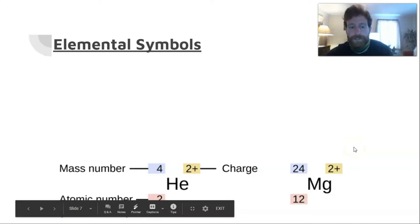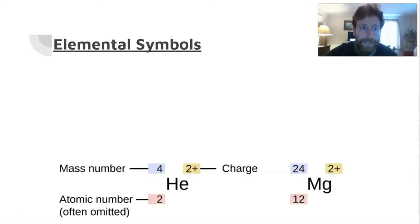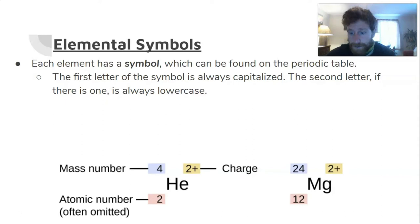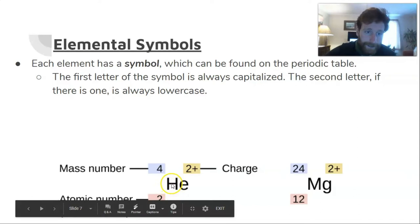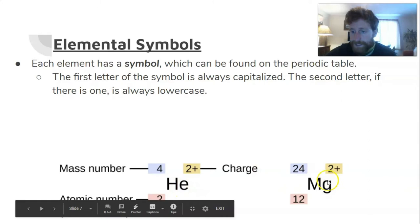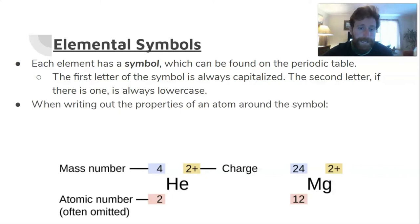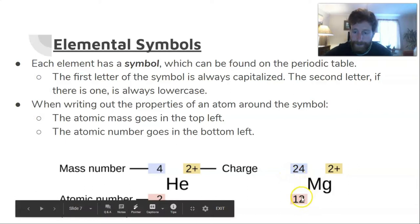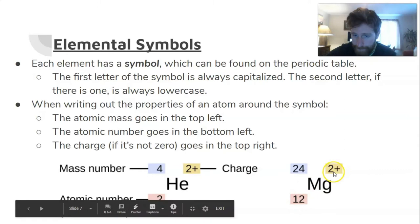When it comes to writing out all of these properties of atoms, we have a systematic way of doing that. It starts with having a symbol. Each element has a symbol which can be found on the periodic table. The first letter of a symbol is always capitalized—note the M here in magnesium or the H here in helium. The second letter, if there is one, is always lowercase—so the E here in helium is lowercase, the G here in magnesium is lowercase—but not all elements will have two letters. Carbon, for example, is just a capital C. When writing out the properties of an atom around the symbol, we always do it in the same order: the atomic mass goes in the top left, you can see here in magnesium 24 is the atomic mass; the atomic number goes in the bottom left, in magnesium it's 12; and the charge goes in the top right if it's not zero. If it is zero, often we just leave the charge out. If you don't see a charge there, you can assume it's neutral.